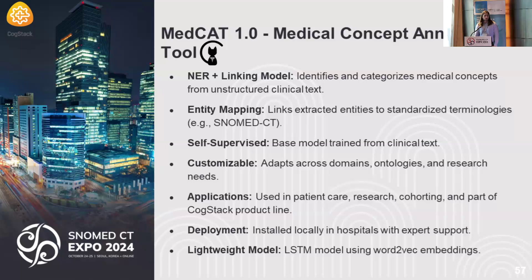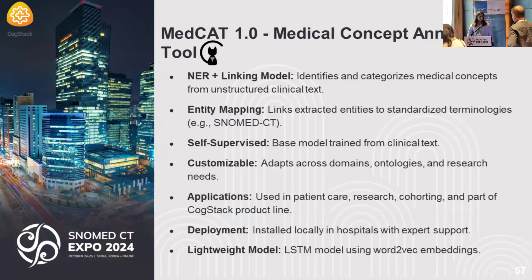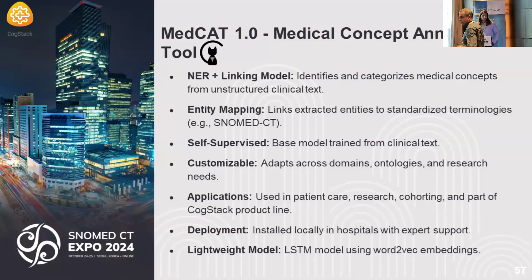I'll briefly describe MedCAT 1.0. It's a named entity recognition and linking model. It identifies concepts and then categorizes them into the correct SNOMED concept ID. It starts off with a self-supervised or unsupervised model, which can be seen as a base model that's just learned from clinical text without any labeling, and then later on we can do active learning using the MedCAT trainer. So it's customizable — it adapts across different clinical domains, ontologies, and research needs.